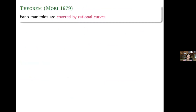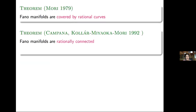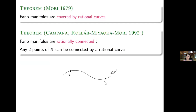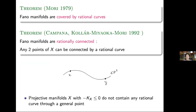This is a general property of Fano manifolds: Mori proved in 1979 that any Fano manifold is covered by rational curves. Even more is true — this has been proved later by Campana and Kollár-Miyaoka-Mori: Fano manifolds are in fact rationally connected. That means that given any two points of X, we can always find a rational curve connecting them. In contrast, projective manifolds for which the anticanonical class is less than or equal to zero do not contain any rational curve through a general point. Being covered by or containing many rational curves is a distinguished property of Fano manifolds.